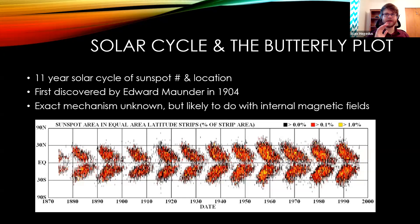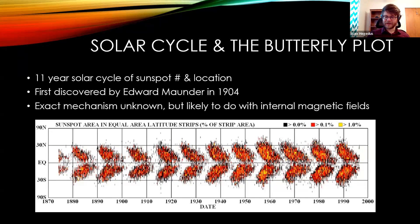While this plot shows sunspot number, that is highly correlated with solar activity in general. The more sunspots we see, the more space weather and extreme events we observe. Conversely, the fewer sunspots we see, the calmer the space weather, with fewer coronal mass ejections and fewer eruptions of solar energetic particles. We're going to talk about those sorts of things in detail.